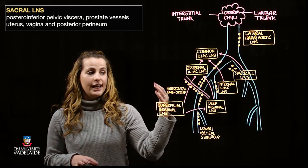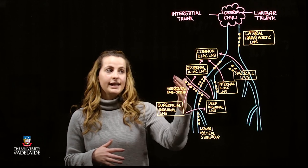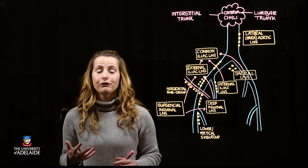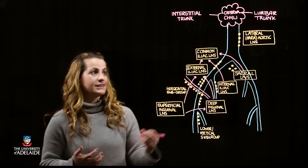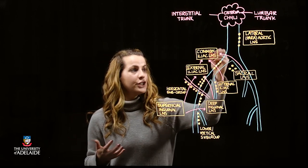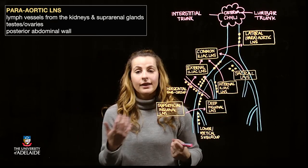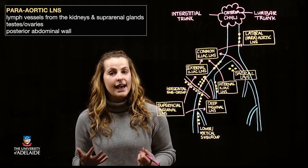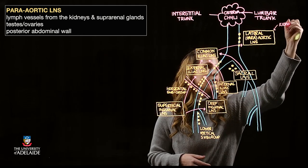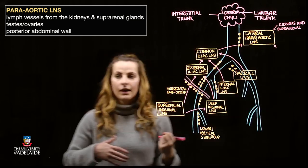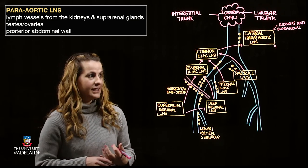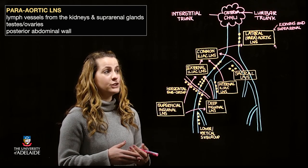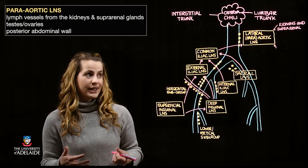All three groups — sacral, internal iliac, and external iliac — drain into the common iliac lymph nodes. Lymph from the common iliac nodes then drains directly into the para-aortic lymph nodes. The para-aortic lymph nodes also receive lymphatic contributions from the kidneys and suprarenal glands, and importantly, lymphatic drainage from the gonads — the testes and the ovaries — drains directly into the para-aortic lymph nodes.